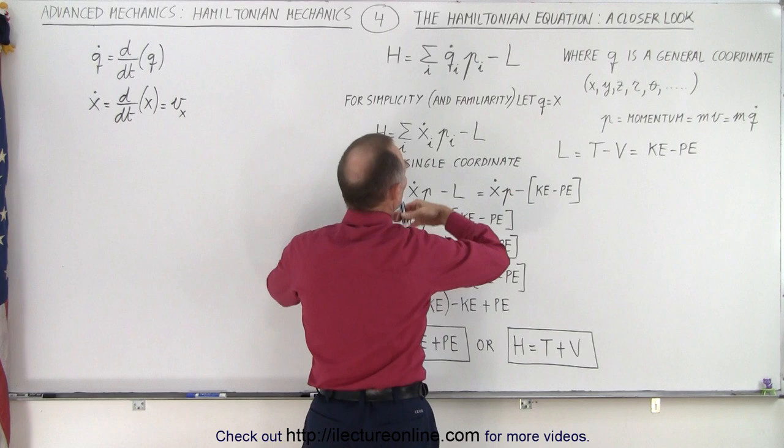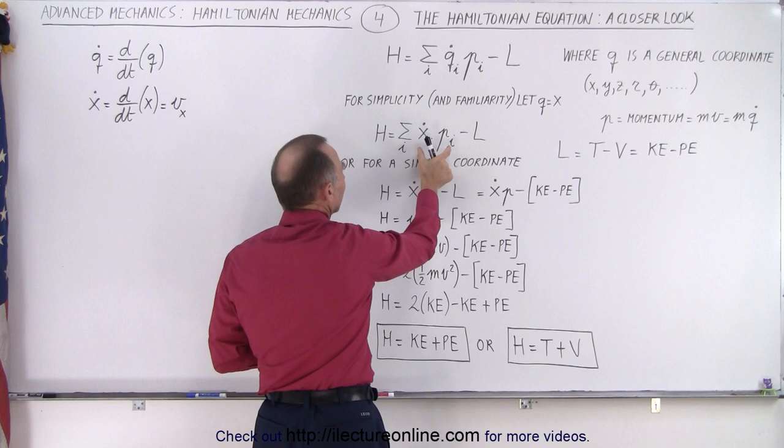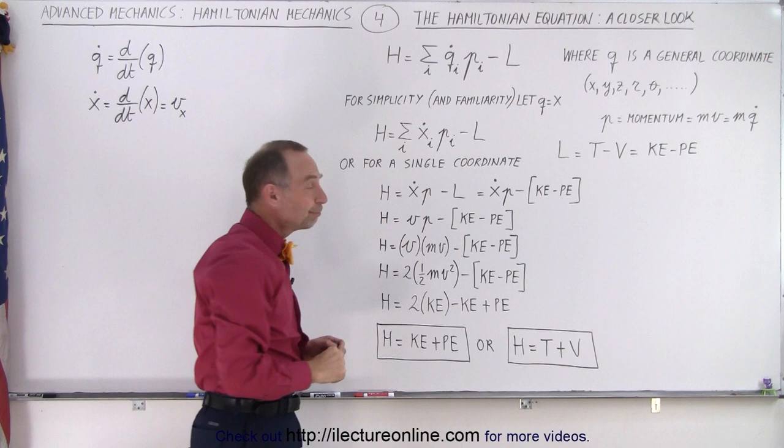So for familiarity, let's replace Q by X. Again, X can be the general coordinate, so it's the sum of the X dot times P over all the coordinates, over all the directions, minus the Lagrangian equation.